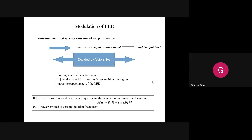So far we have been discussing LED structures where the main concept is the recombination process happening in the active region. We have also seen some mathematical aspects in the last session on how to estimate quantum efficiency, both internal and external. Today we are going to see the last few fragments of LEDs - specifically the modulation of the LED, which concerns the response time or frequency response.